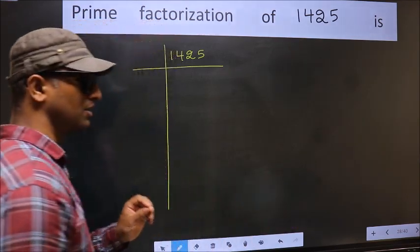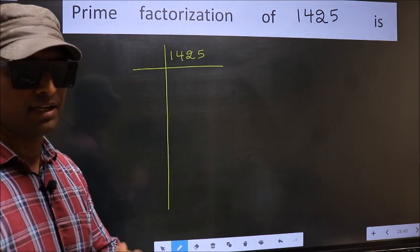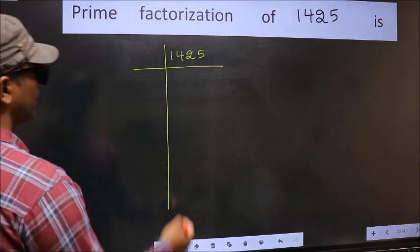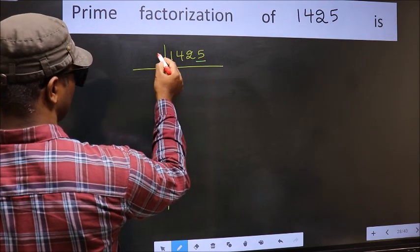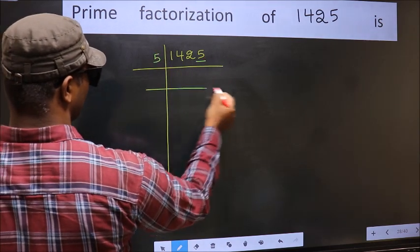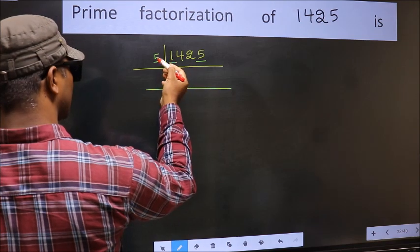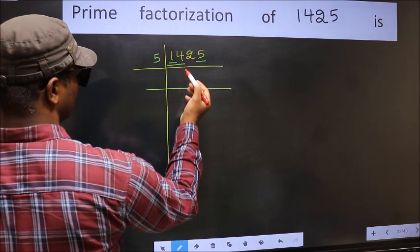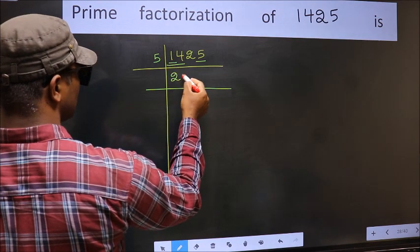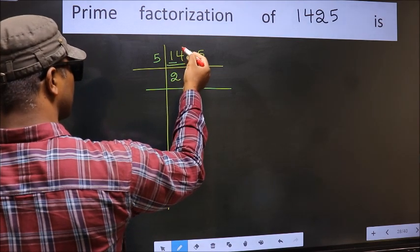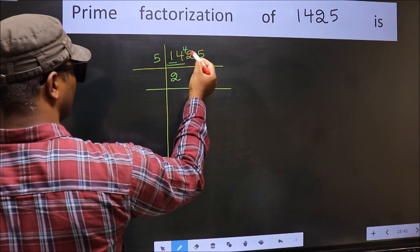This is your step 1. Next, in this number, last digit is 5. So take 5 here. First number 1 is smaller than 5, so take two numbers 14. A number close to 14 in 5 table is 5 times 2 is 10. 14 minus 10 is 4, 4 carried forward makes 42.